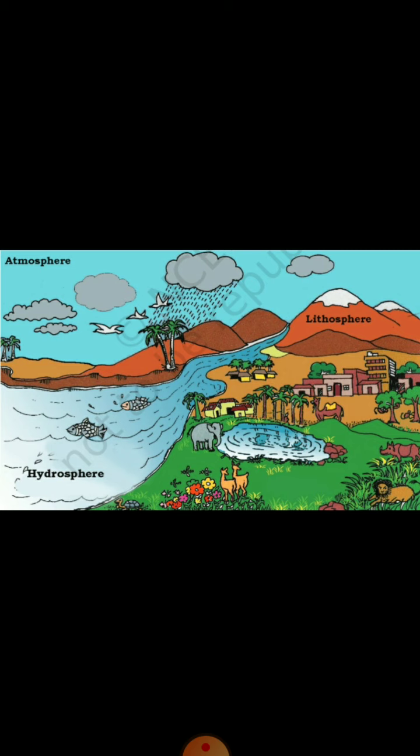Lithosphere. The lithosphere is the solid surface of the earth made up of an uneven rocky crust and a thin layer of soil. It has an irregular surface made up of various landforms like mountains, valleys, plateaus and plains.